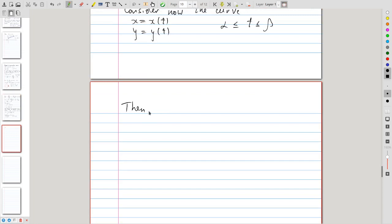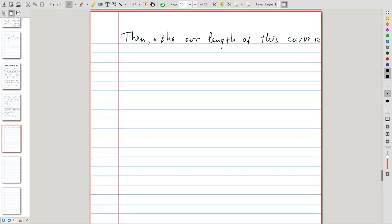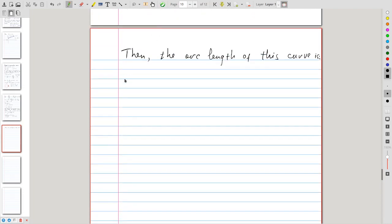its arc length is given by the very similar formula. So, what you get is that L, the arc length, is the integral from alpha to beta, now it's the range for t, of the square root of (dx/dt)² plus (dy/dt)², integrated with respect to dt.